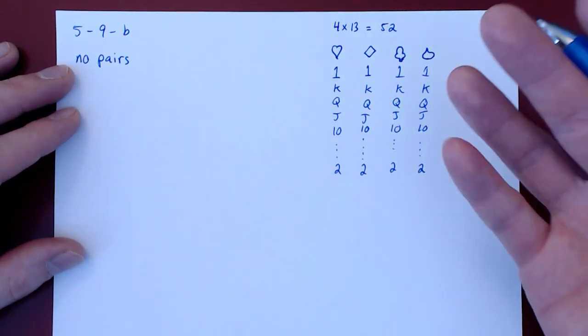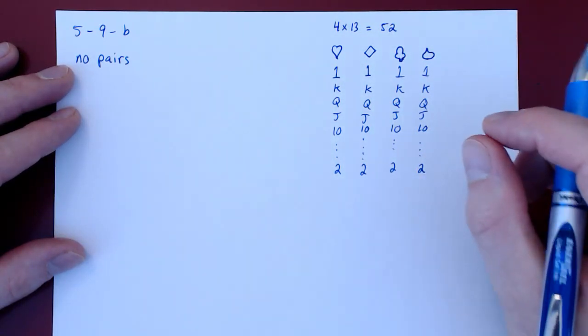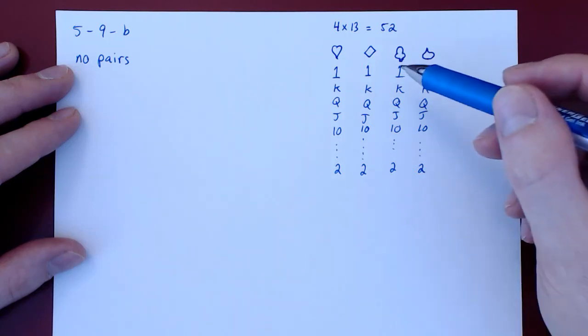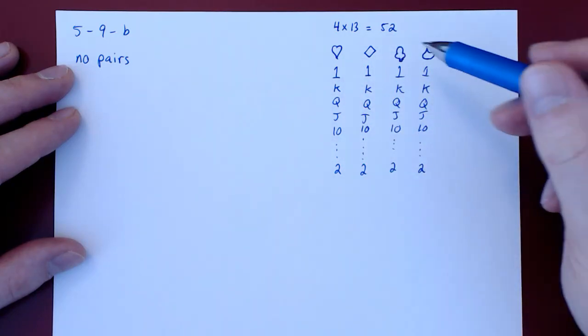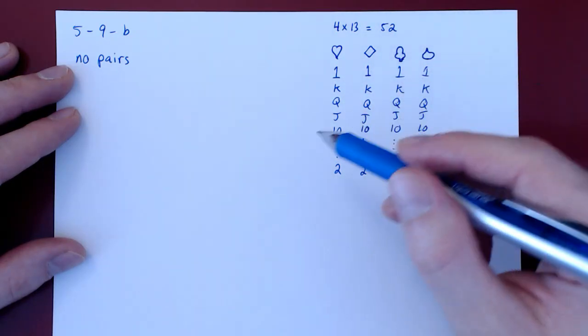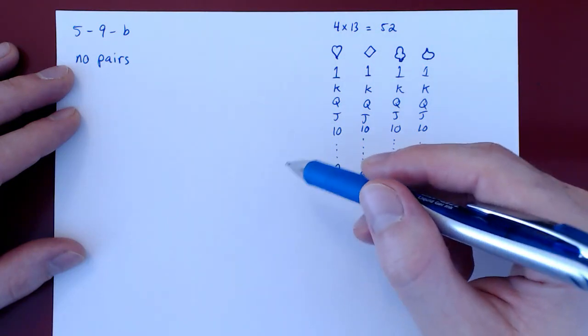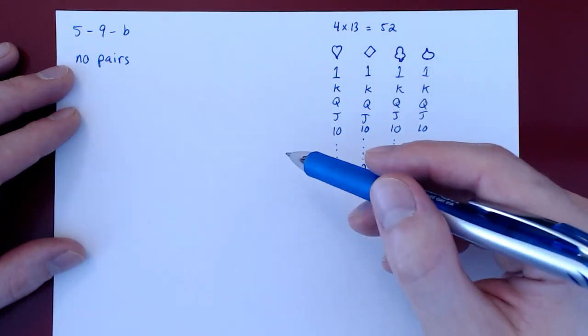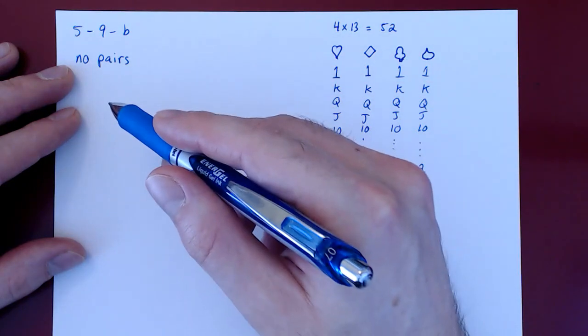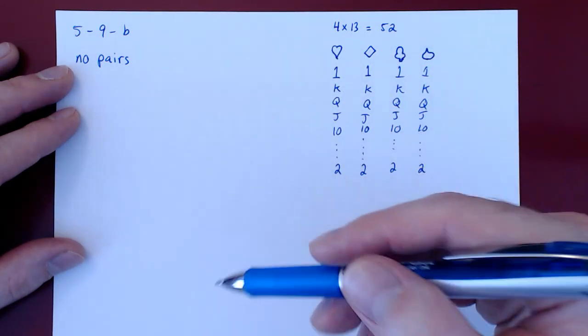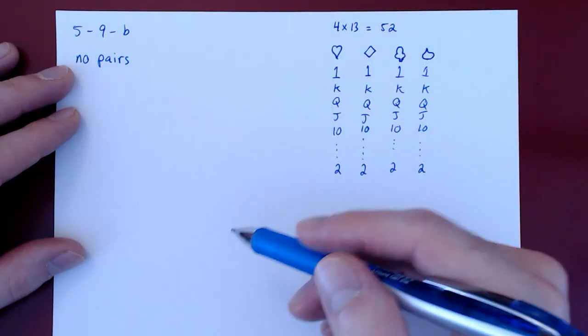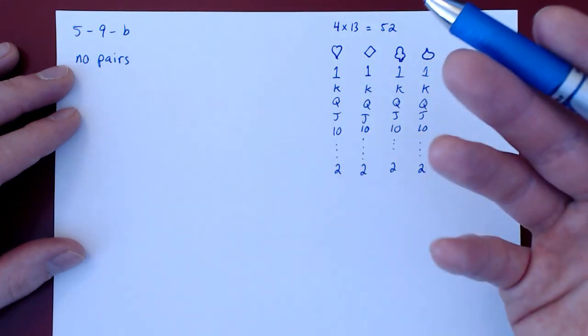Now, every time we have a counting problem, we should always ask ourselves two fundamental questions. Is the selection of these objects, in our case cards, done with or without replacement? Obviously, in this case, it is without replacement. Once you're dealt a card, it's out of the deck, you can't be dealt it again.